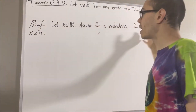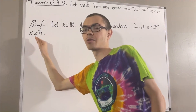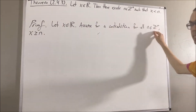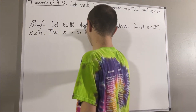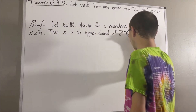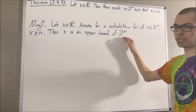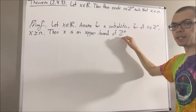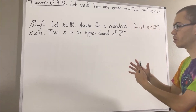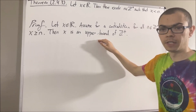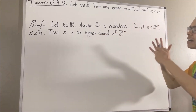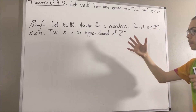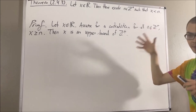So, we see that every positive integer is less than or equal to x, and that's precisely what it means for x to be an upper bound of the positive integers. Now, of course, we know that the positive integers are non-empty. So, the positive integers form a non-empty subset of the real numbers with an upper bound. If you recall, every non-empty subset of real numbers with an upper bound has a supremum. So, the positive integers must then have a supremum.